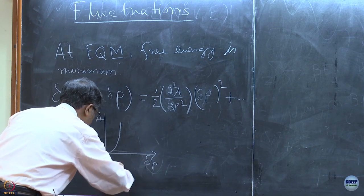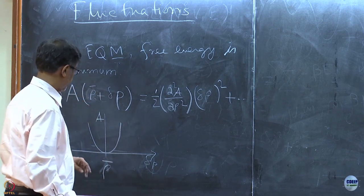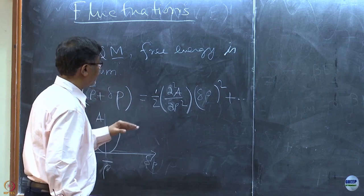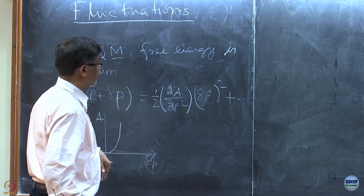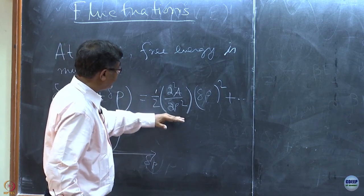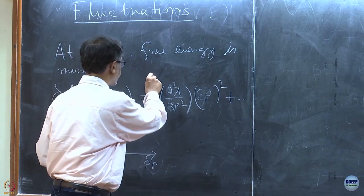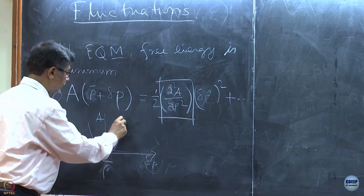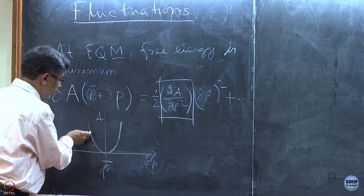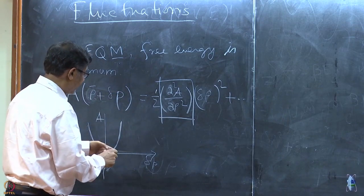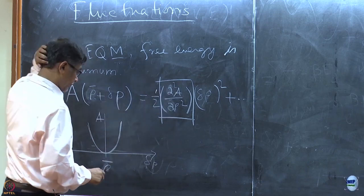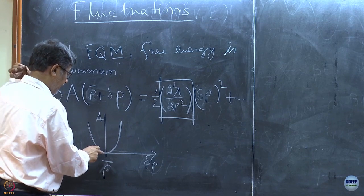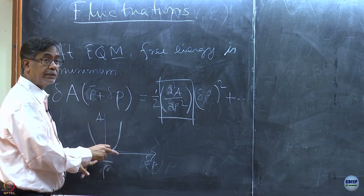This is the rho average. We call this quantity the force constant of the fluctuation. You immediately see that this is the quantity which must be positive, so that there is a cost to free energy.